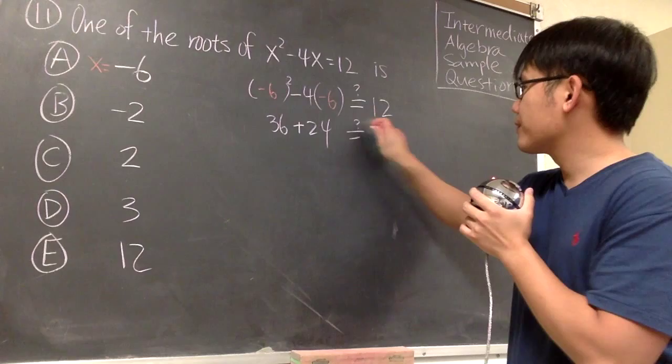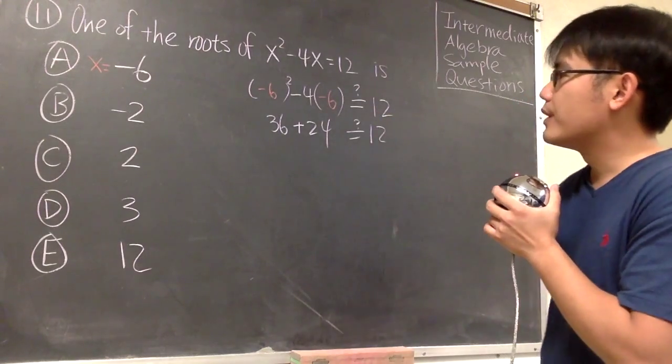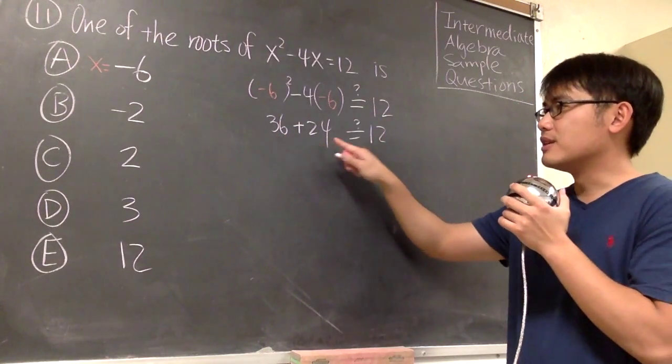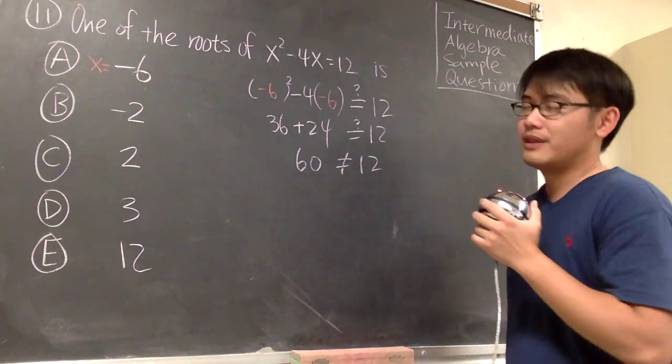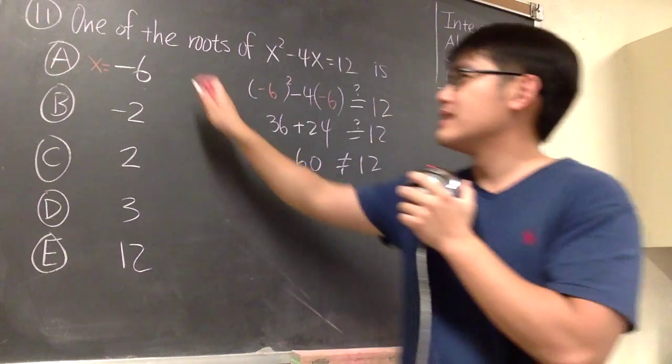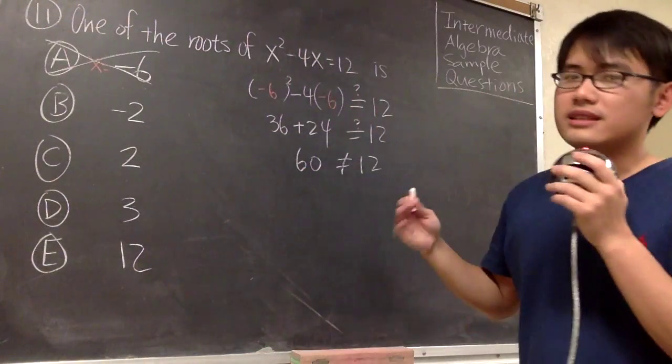And do we get 12? Right here. Well, 36 plus 24, that will give us 60. Of course, this is not 12. And this tells us that choice A is not the answer.